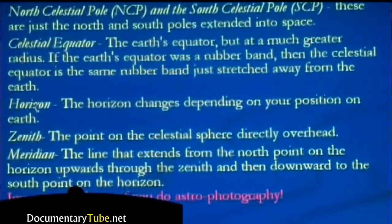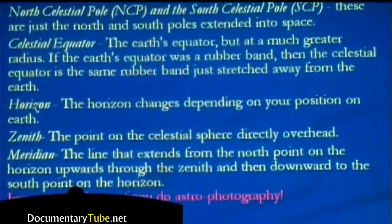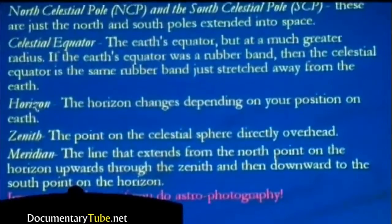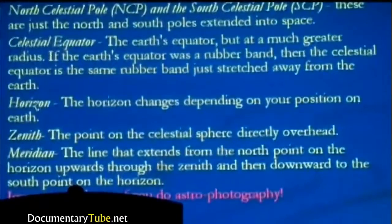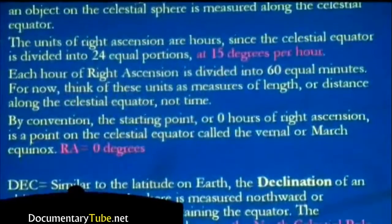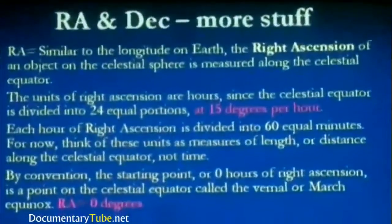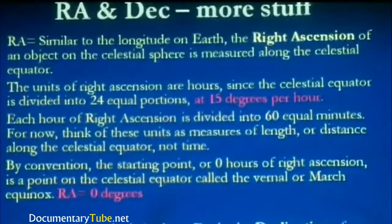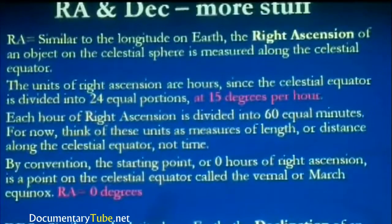If you face directly north and draw a line straight up through the sky all the way to the south, it bisects the sky in half — that line is called the meridian. If you're doing astrophotography, this matters because as your mount hits the meridian, it has to turn 180 degrees and continue — called the meridian flip. Right ascension is similar to longitude on Earth. The right ascension of an object is measured along the celestial equator, just like longitude lines run north and south.